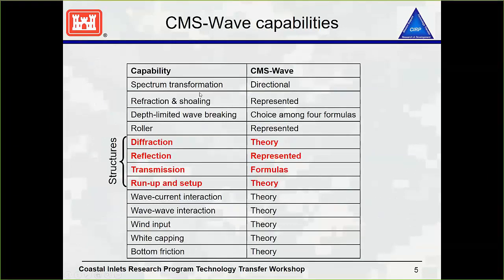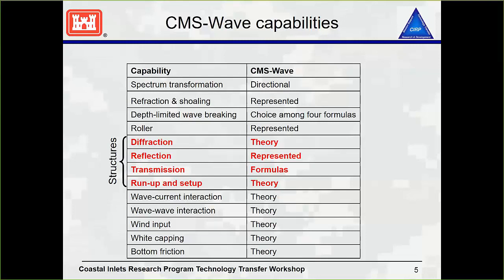Some of the capabilities for CMS-Wave — a lot of other wave models out there do similar things, but they're represented a little bit more simply. We have good theory and formulas representing these particular capabilities, whereas other models are a little bit simpler in their calculations where it's all parameterized. So we do a little bit better job in some areas for some of these different capabilities than other models.